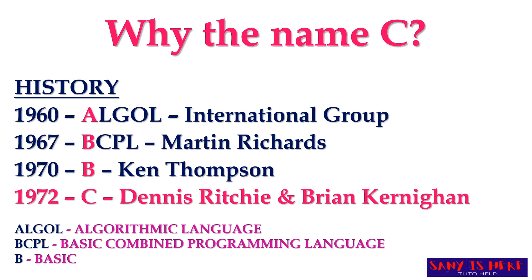Further improvement led to the B language — B meaning Basic language — which was developed in 1970 by Ken Thompson. Later on in 1972, Dennis Ritchie and Brian Kernighan developed the improved version of B language, and that is C language. You can see it is simply the next alphabet after B — they took the name directly from that pattern and named it C.